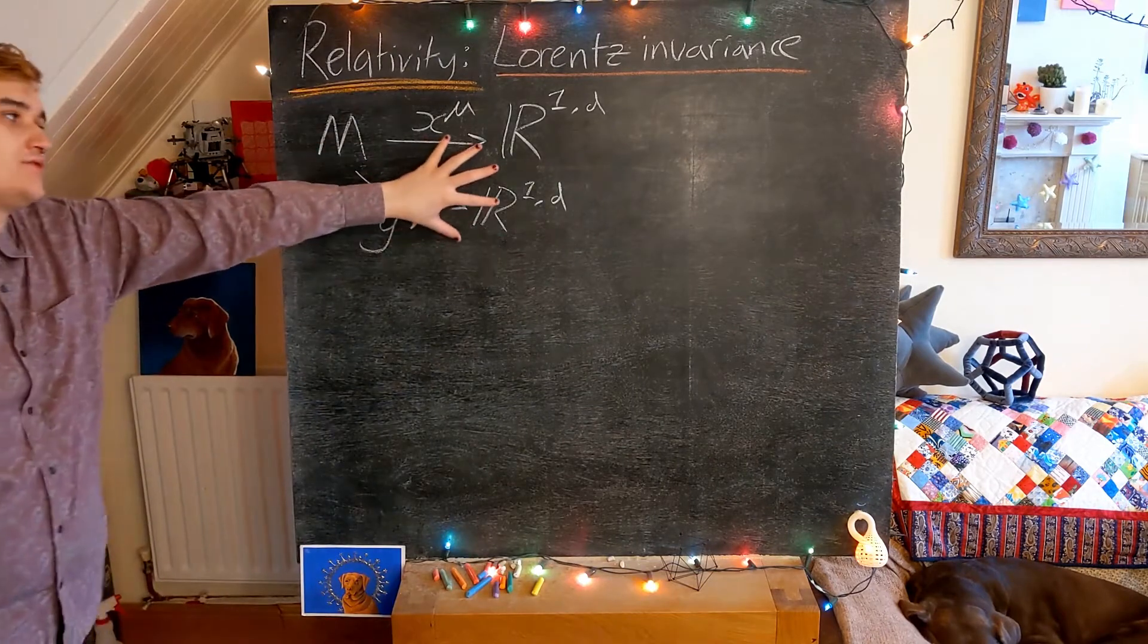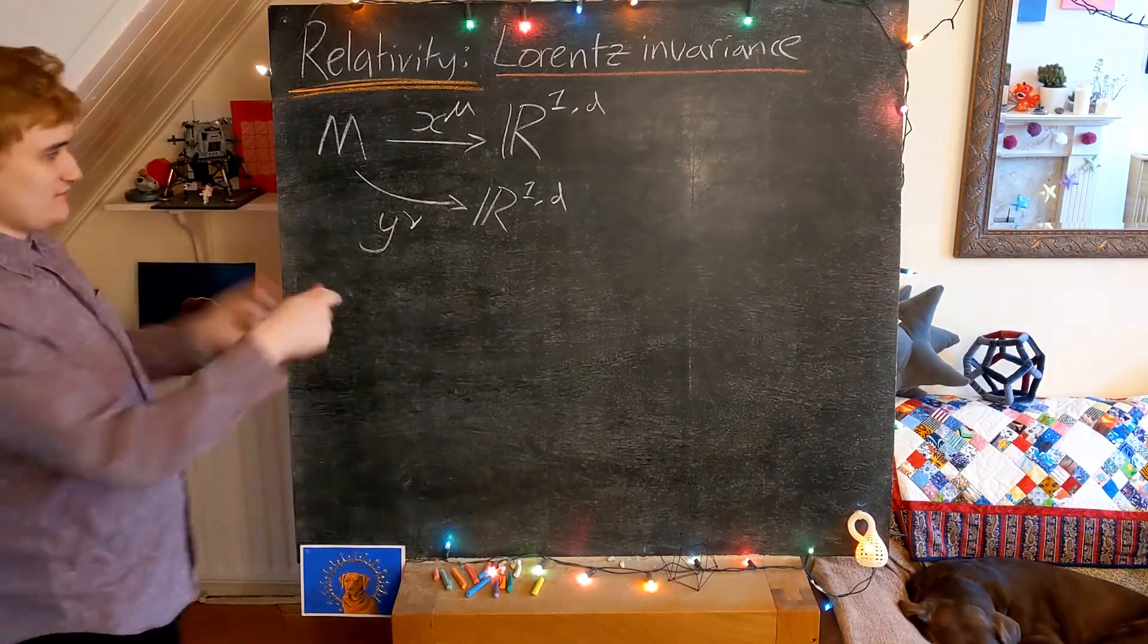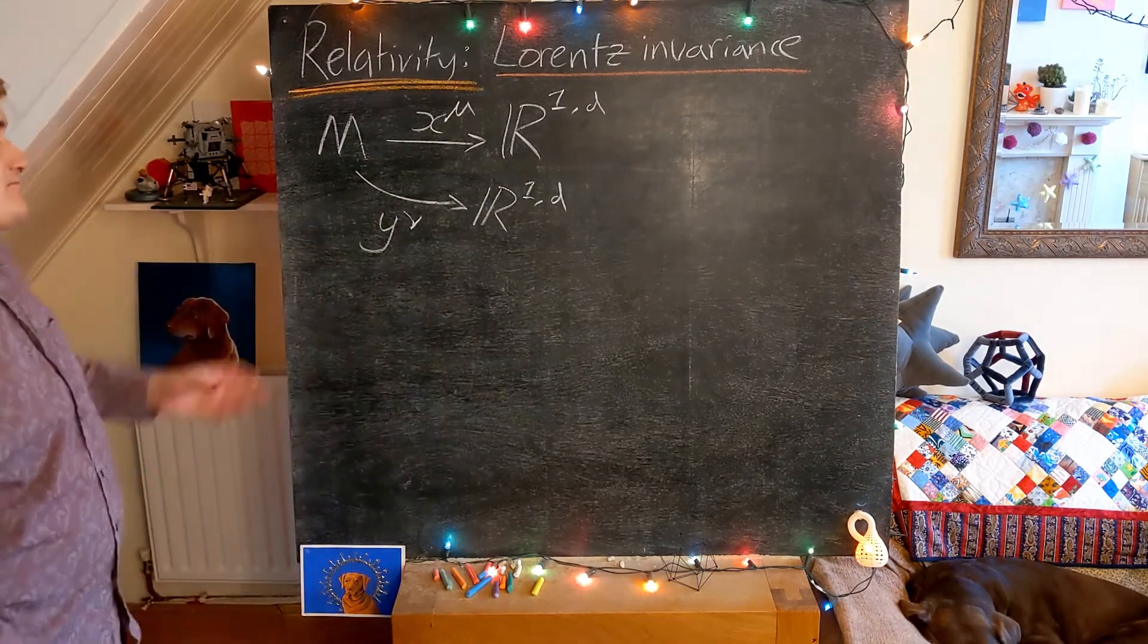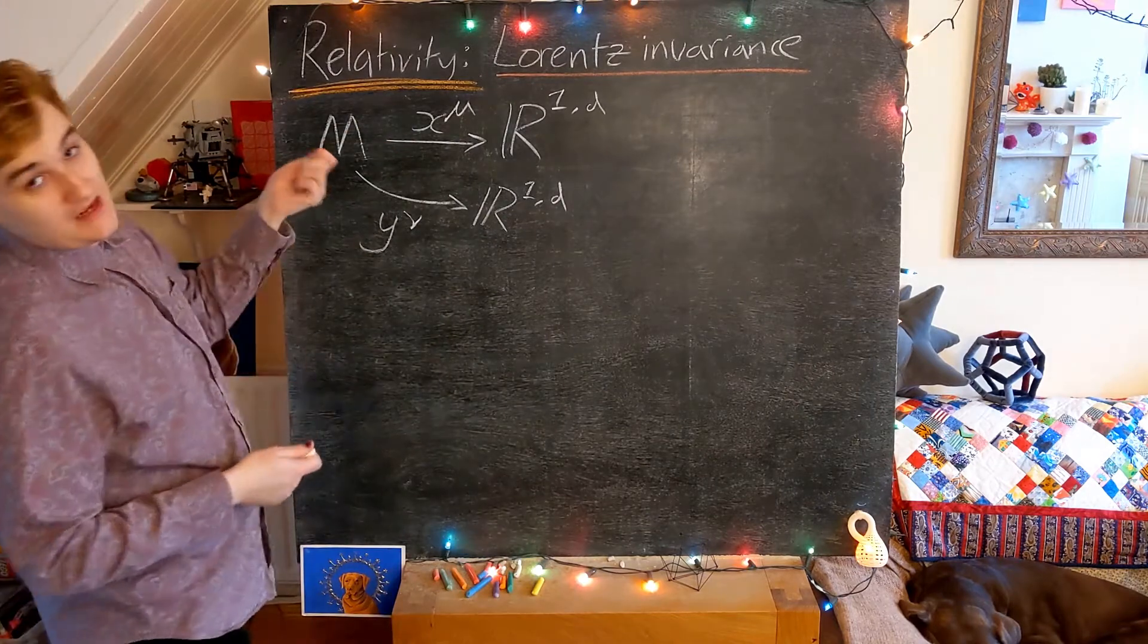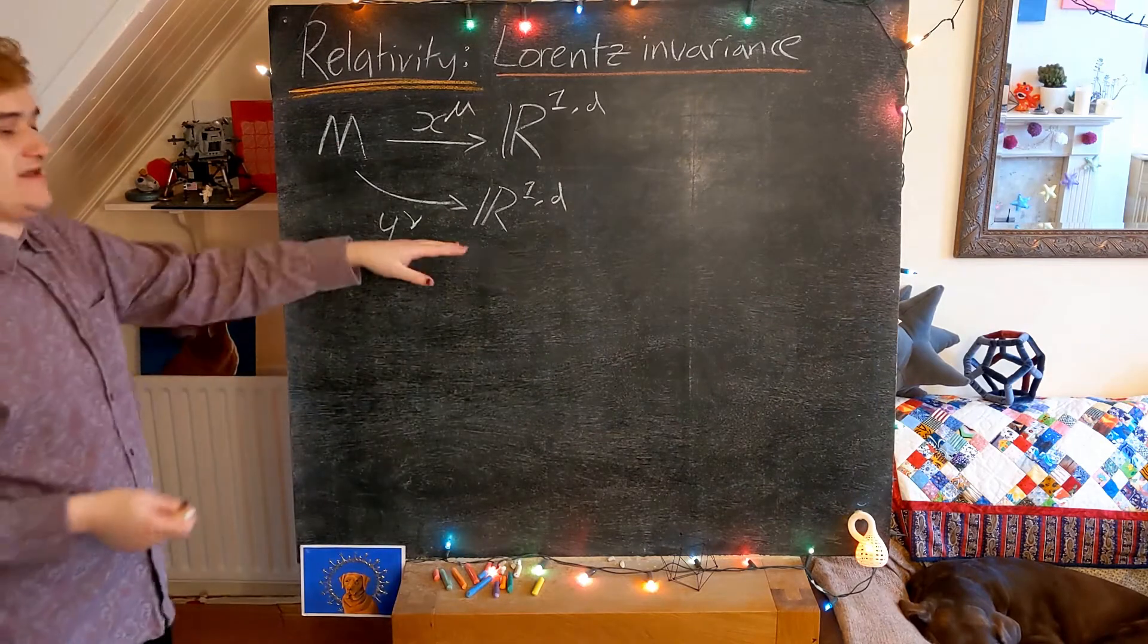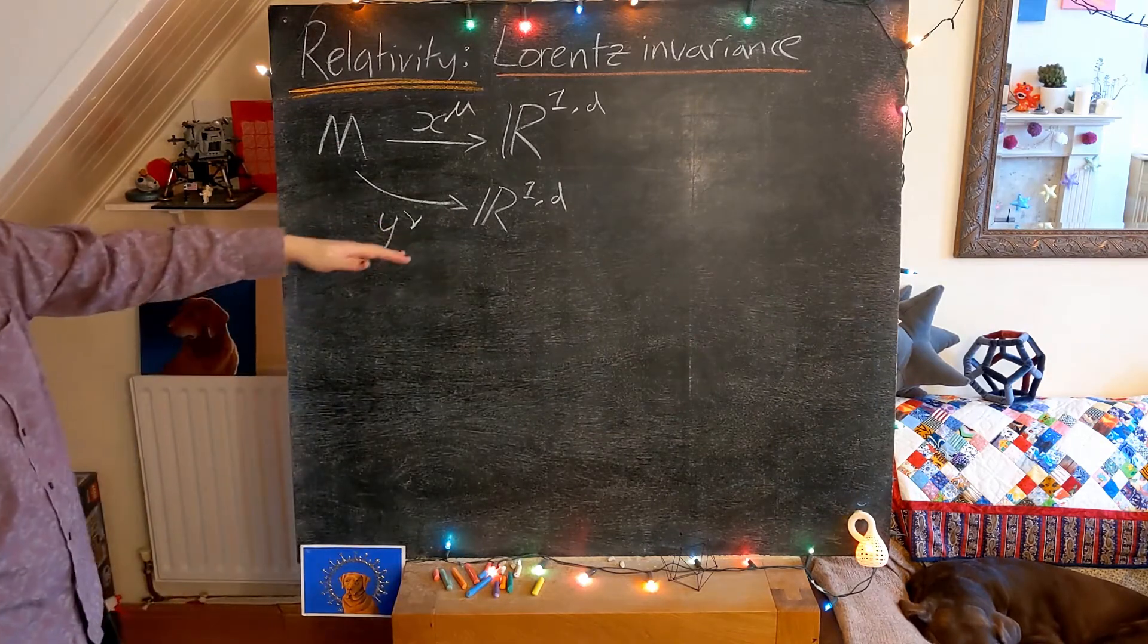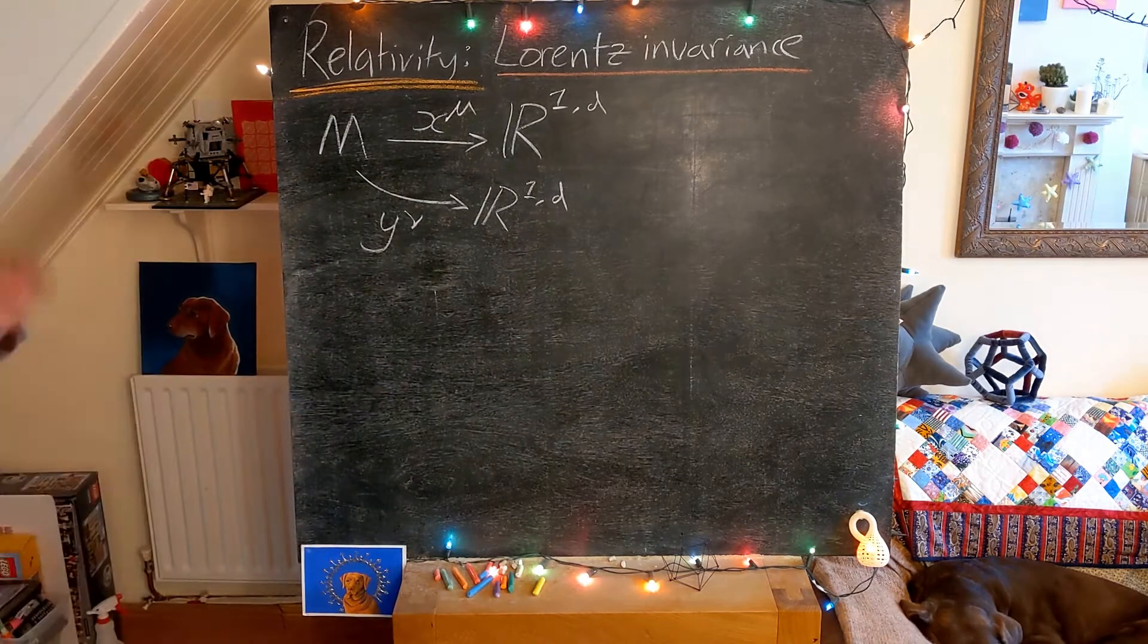But now these two sets of coordinates are just mapping this same underlying space-time. So this x and y, they're talking about the same underlying topological space, but they're just essentially assigning different real number representations to the points of this topological space.